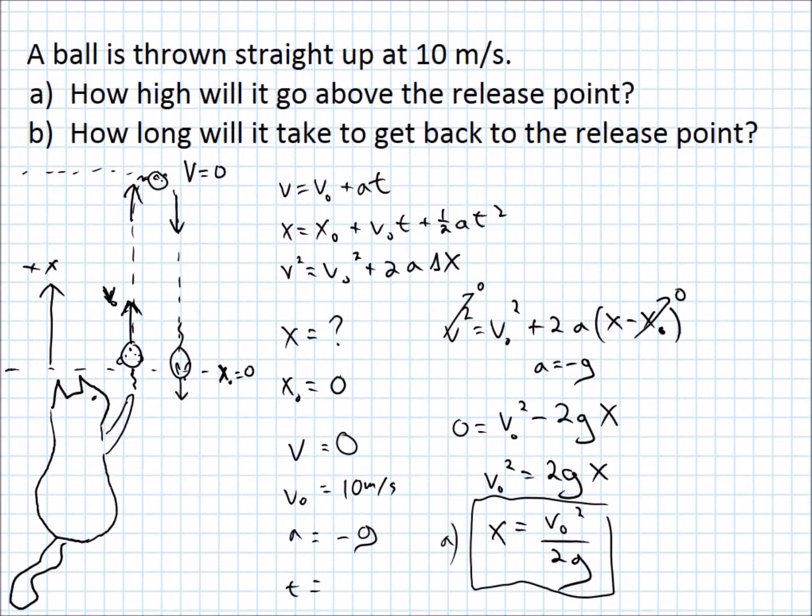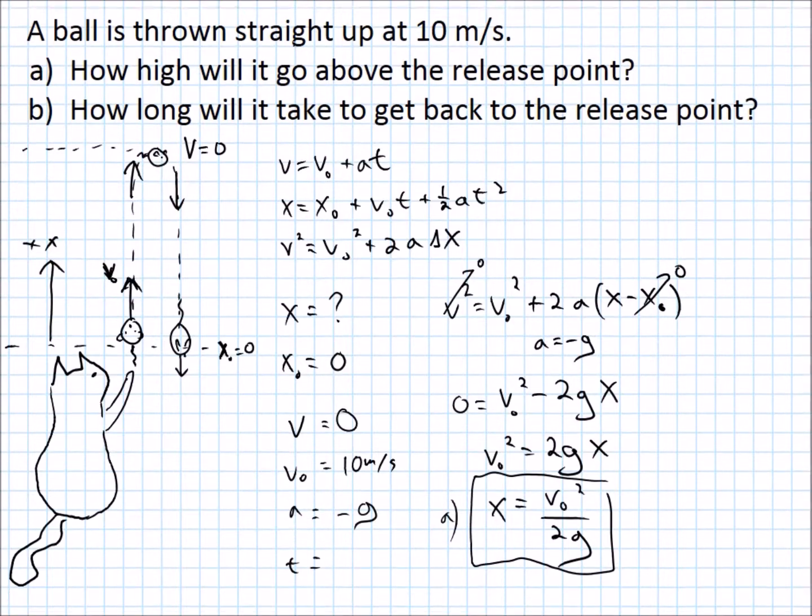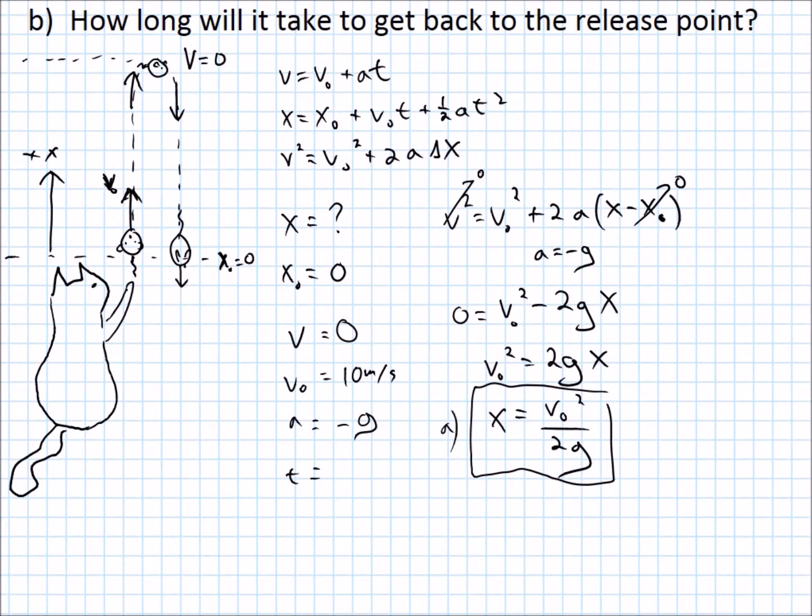So, part B, how long will it take to get back to the release point? So, in this case, the initial is still the throw, but the final is all the way back down at the hand again. And we're wondering how long it's going to take. All right. So, now, our picture's still good, but we kind of need to start over, because we have a different initial, same initial, but we have a different moment that we're calling final. So, the variables I named aren't really going to be good anymore, some of them. So, let's go and pick some new ones. So, for part B, we're going to need to know X, X initial, V, V initial, A, and T. So, X, well, let's call that X initial 0 again. That worked out nicely last time.